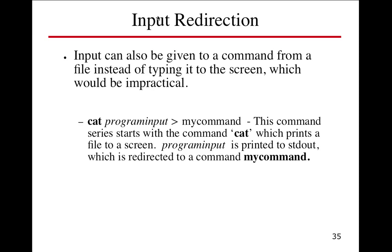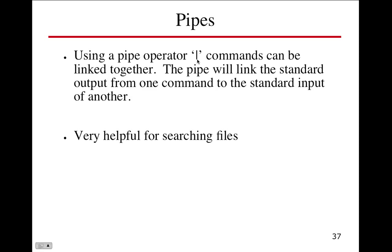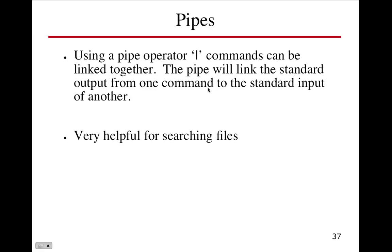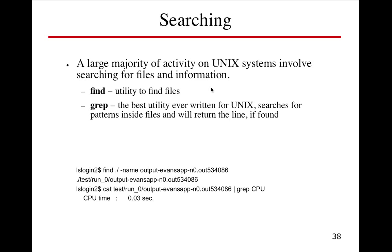So here are pipes. Using a pipe operator — it's that vertical line. On my MacBook it's actually underneath the delete key on the right-hand side. On Windows it kind of looks like a line with a dot in the middle. It doesn't matter — it's just the representation of that ASCII key. The pipe will link the standard output from one program to the standard input of another. Very helpful for searching files. You'll have an assignment that will involve searching using grep and find. A large majority of activities on the Unix system involve searching and finding stuff.